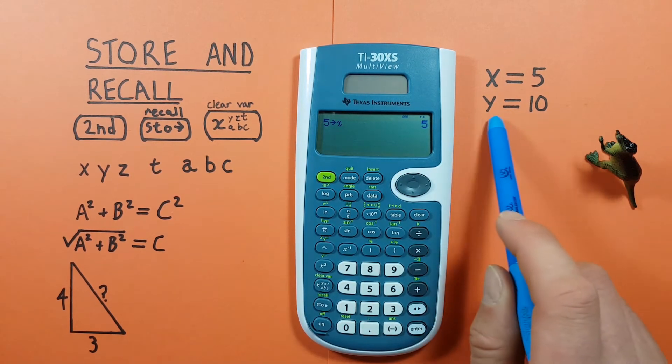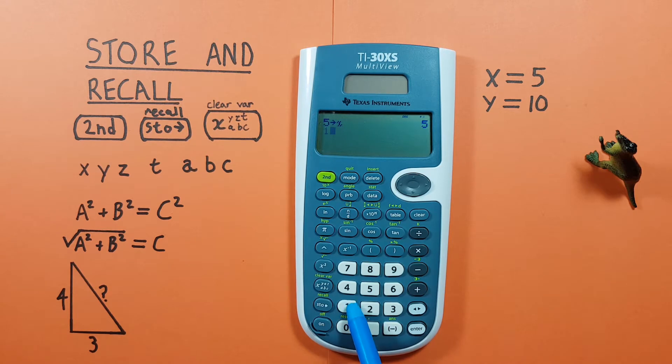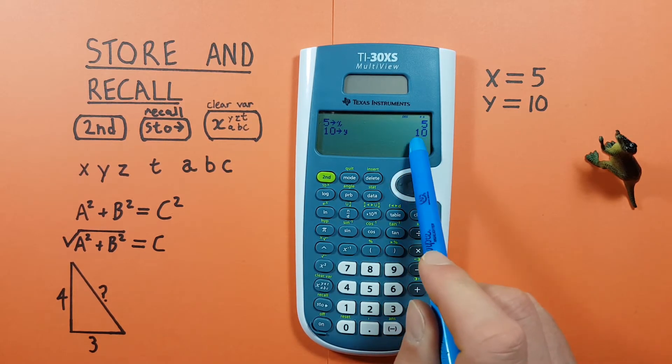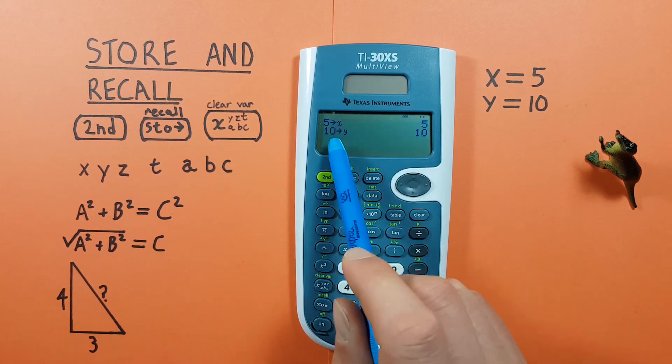Next let's put 10 into Y. So again we put 10 on the screen, hit the store key, and then cycle through to Y, press enter, and there we go. Our 10 has now been stored in the Y slot.